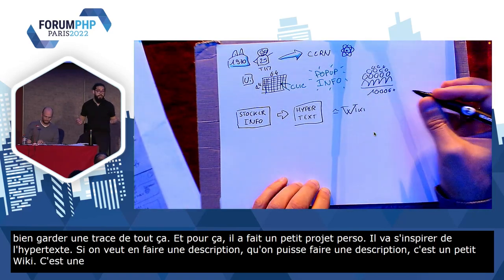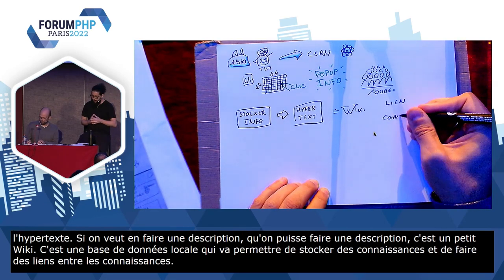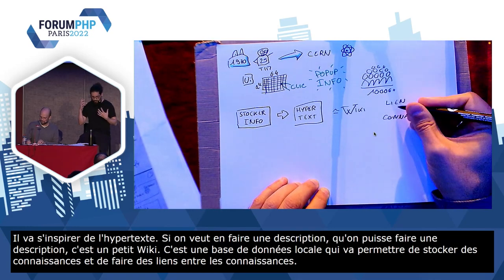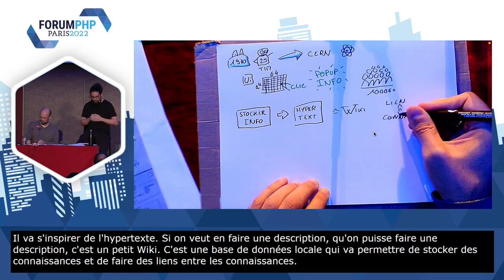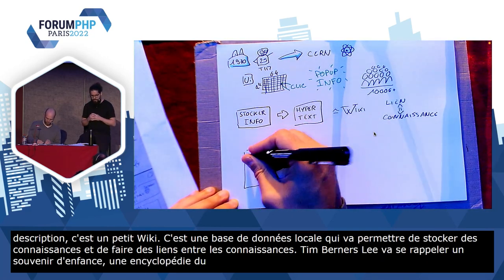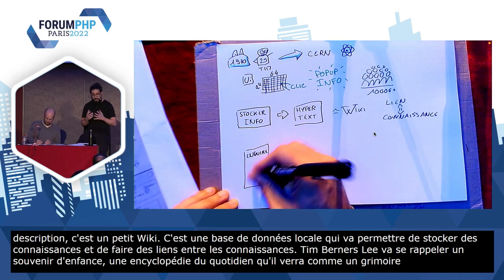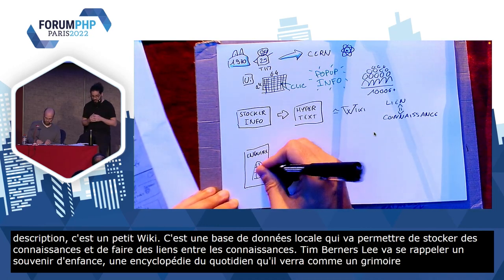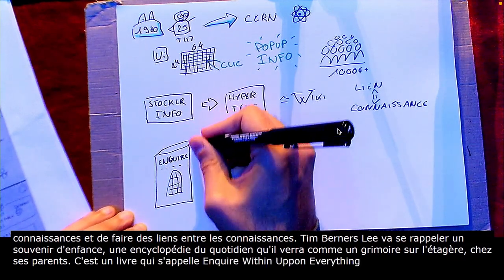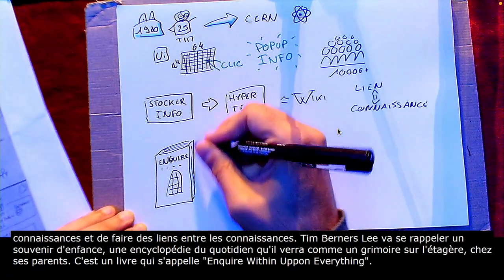Et quand on fait un projet perso, à un moment, il faut bien lui trouver un nom. Tim Berners-Lee va se rappeler un souvenir d'enfance : une espèce de mini-encyclopédie du quotidien qu'il verra comme un grimoire, un vieux livre poussiéreux sur l'étagère chez ses parents, qui s'appelle « Inquire Within Upon Everything » — littéralement, renseignez-vous sur tout. Et donc, il va nommer son projet Inquire.